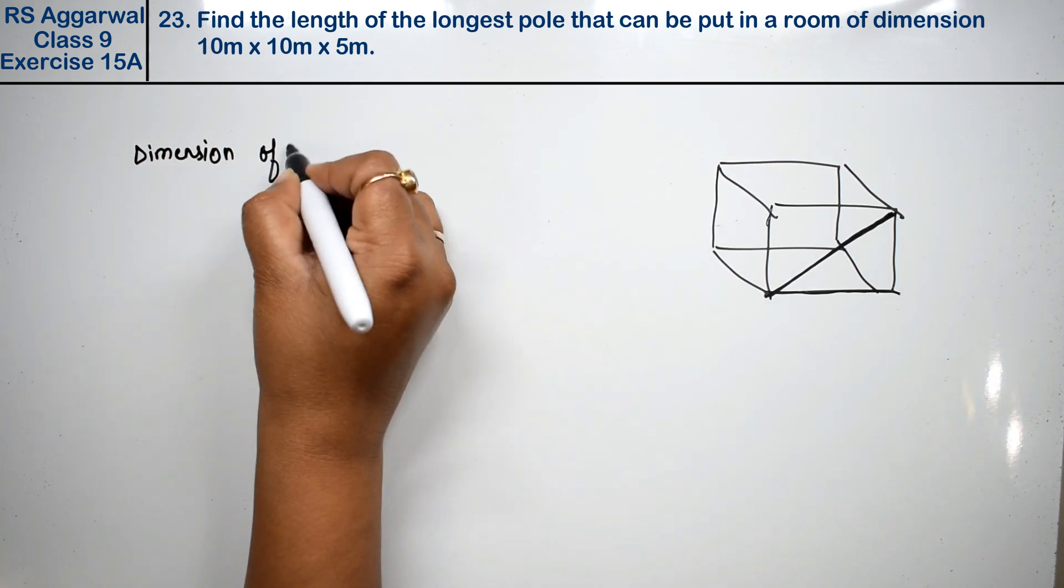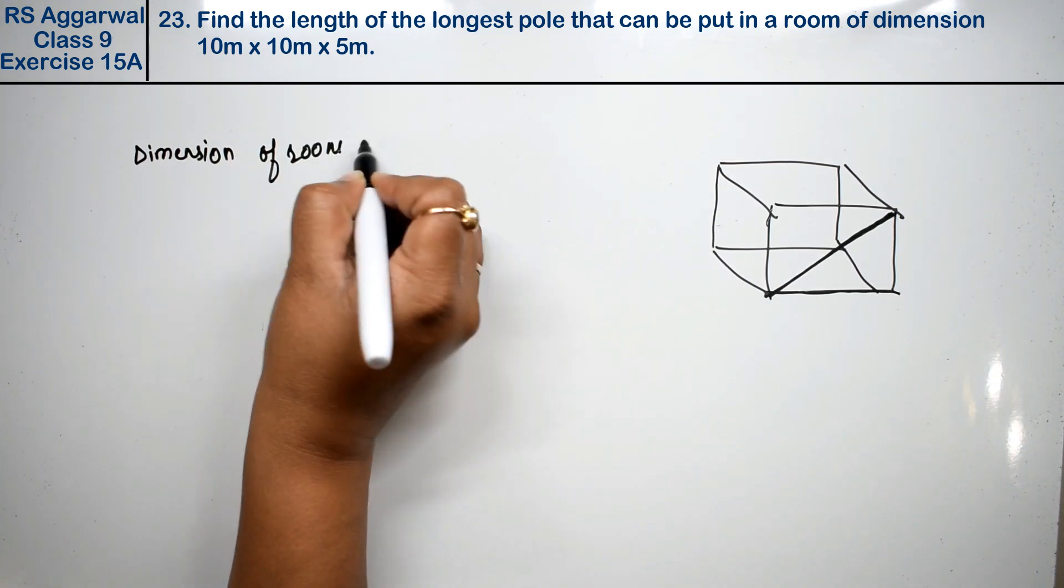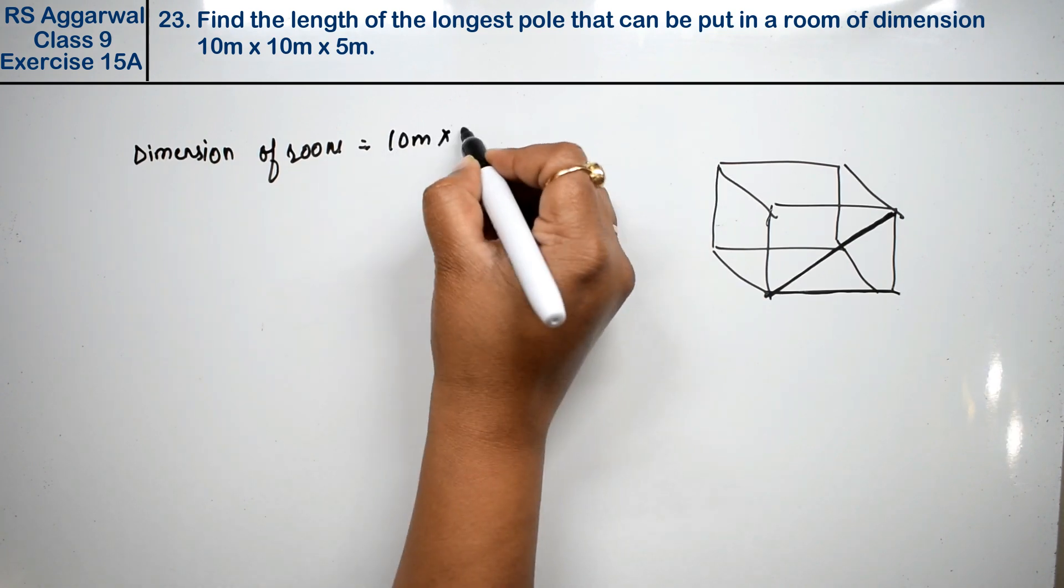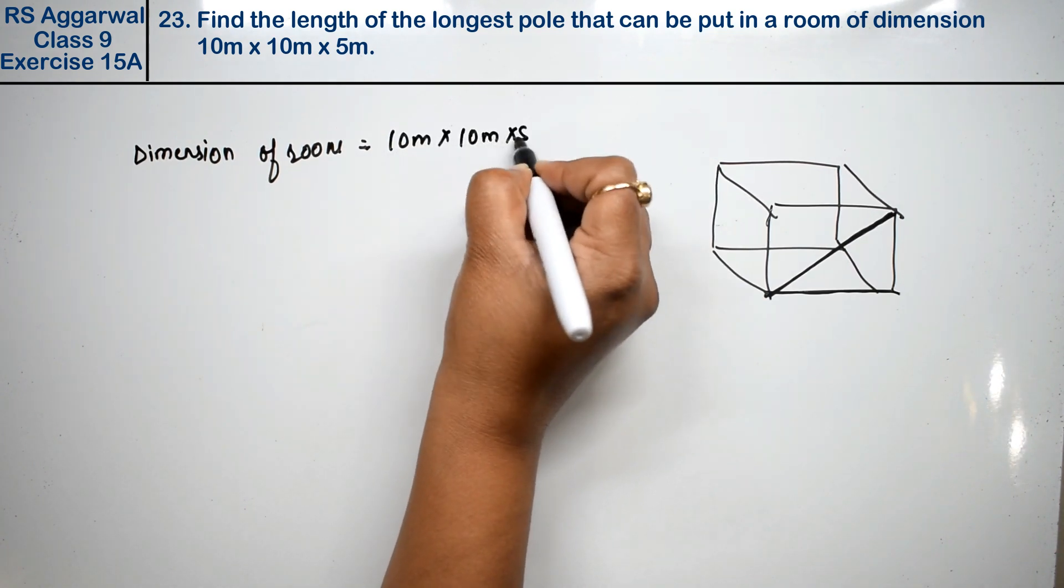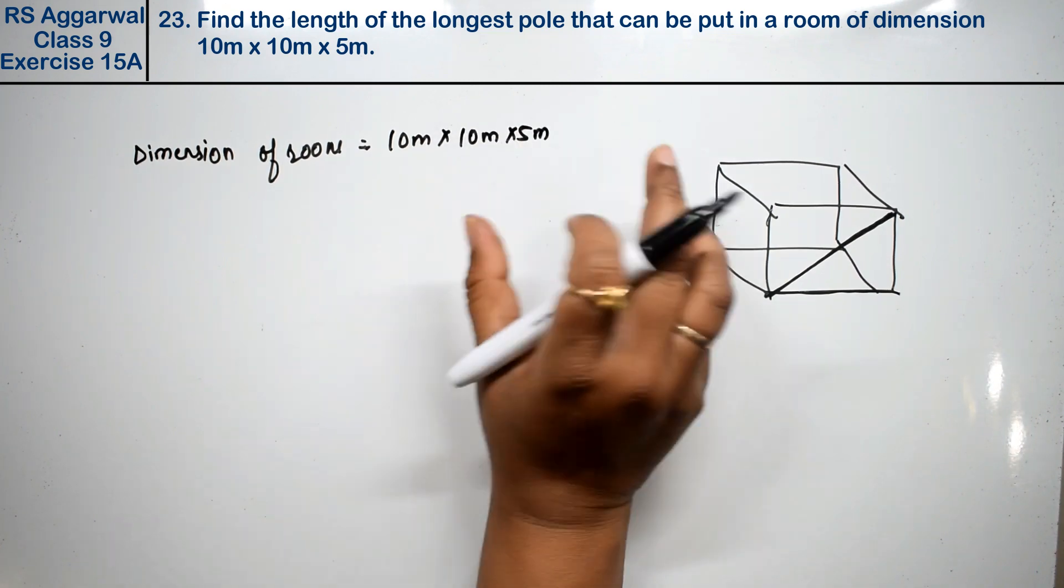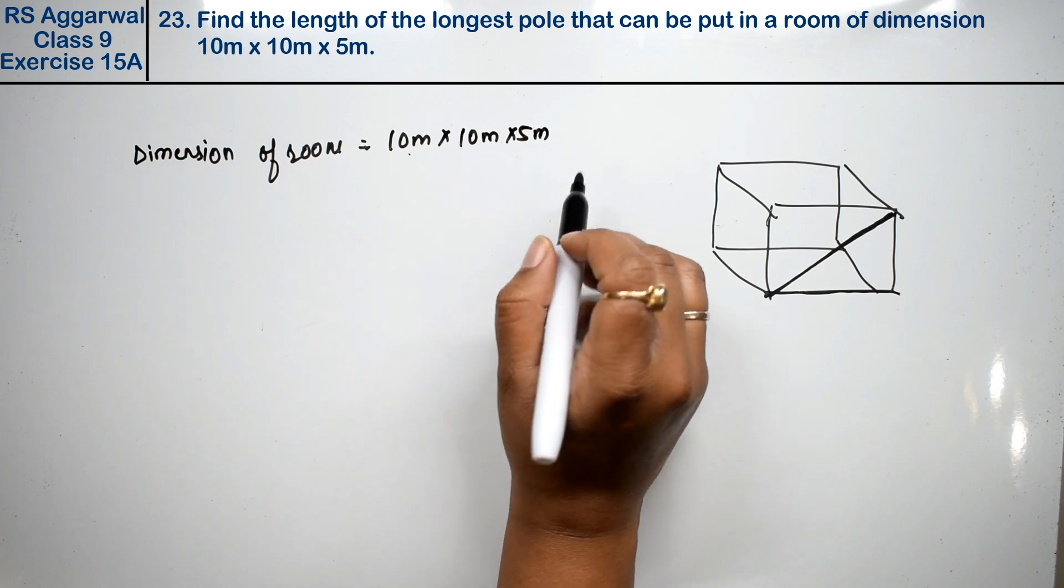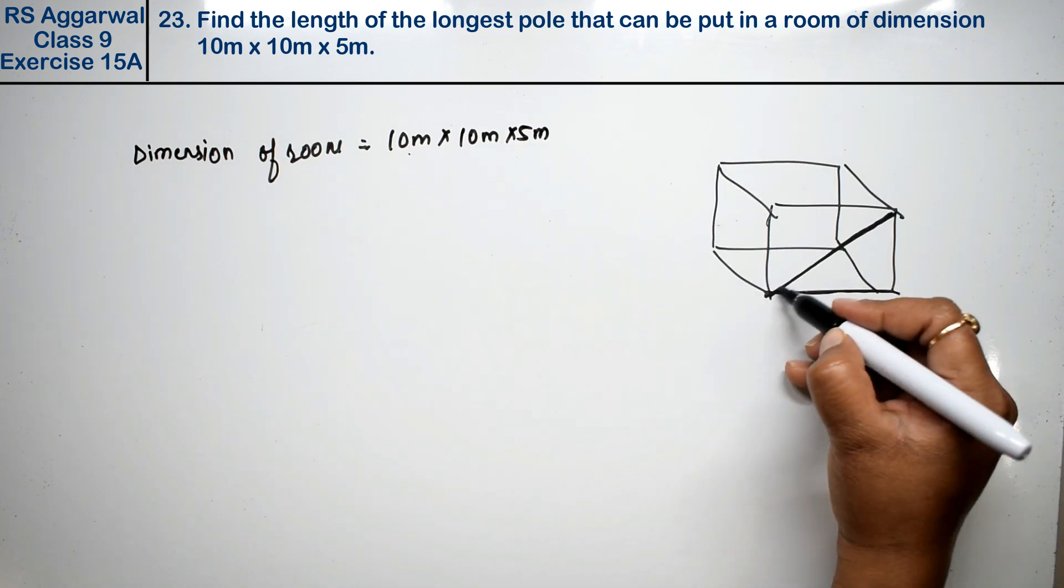Dimension of room. Dimension of room is 10m x 10m x 5m. So this means it's not a cube but a cuboid because there are different dimensions.